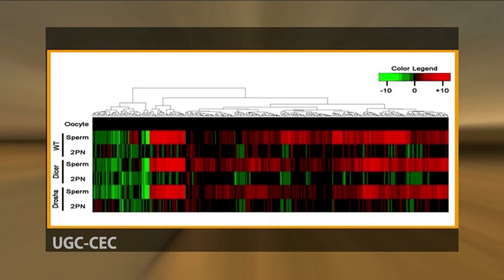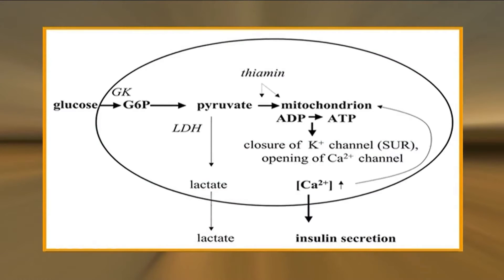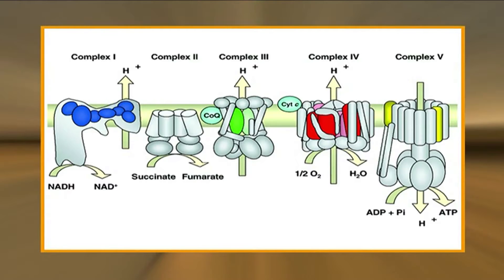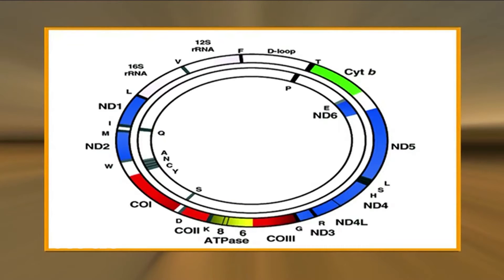Since almost all the mitochondria of fertilized eggs are contributed by the oocyte rather than by the sperm, germline mutations in mitochondrial DNA are transmitted to the next generation by the mother. Such mutations have been associated with a number of diseases. Mutations in one mitochondrial transfer RNA gene are associated with metabolic syndrome, the human condition associated with obesity and diabetes. In addition, Leber's hereditary optic neuropathy, a disease that leads to blindness, can be caused by mutations in mitochondrial genes that encode components of the electron transport chain. The progressive accumulation of mutations in mitochondrial DNA during the lifetime of individuals has also been suggested to contribute to the process of aging.